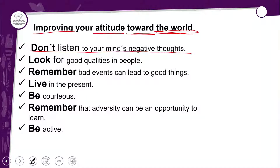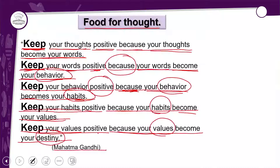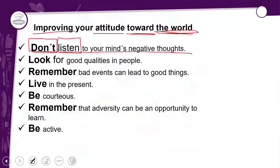Aqui já temos um imperativo diferente — com 'don't'. O verbo do imperativo é 'listen'. A presença do 'don't' indica negação. 'Don't listen to your mind's negative thoughts' — não escute os pensamentos negativos da sua mente. Try to do it — tente fazer isso.